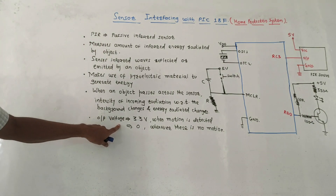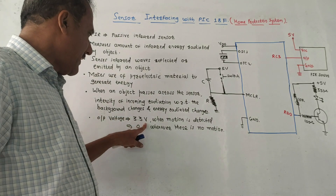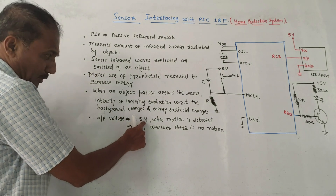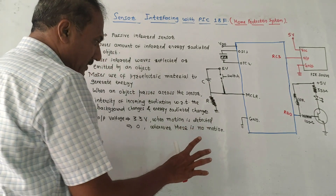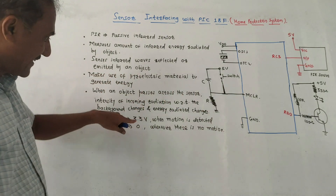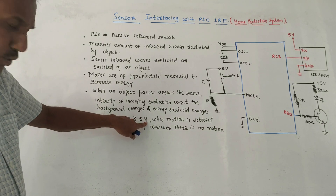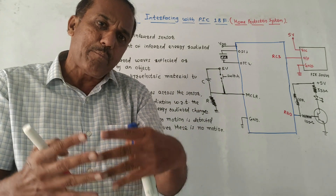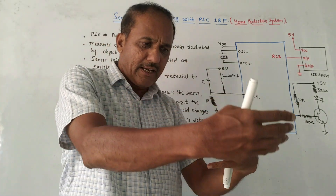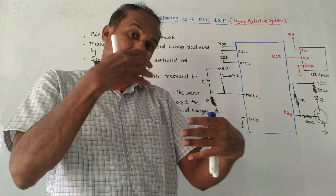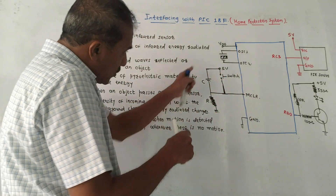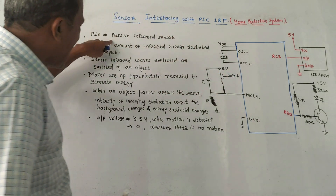The output voltage range of the sensor is 3.3 volts. When motion is detected — whether an object or human being — the output voltage is 3.3 volts, and it is 0 whenever there is no motion. That 3.3 volt indication will be captured and passed to the microcontroller, which will then generate the appropriate signal to provide an indication.